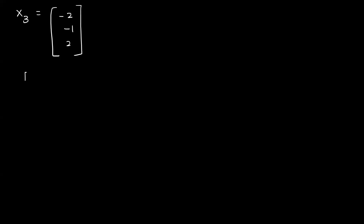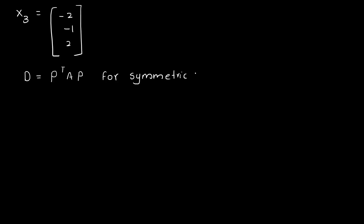Now we write the diagonal matrix. Since A is a symmetric matrix (A transpose equals A), we use the formula P transpose into A into P equals diagonal matrix. For symmetric matrices, P inverse equals P transpose. We apply this condition to find the modal matrix P.